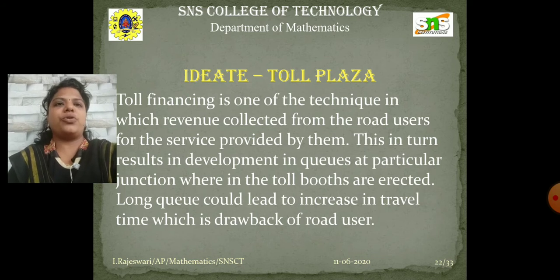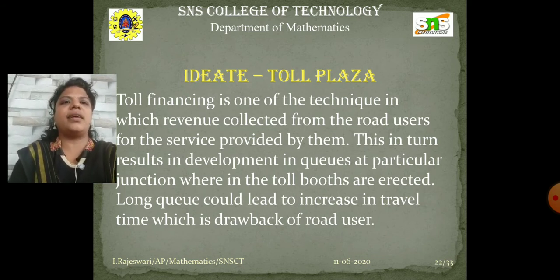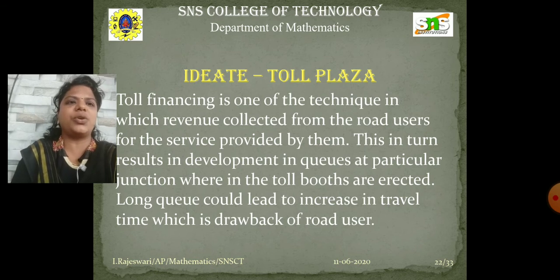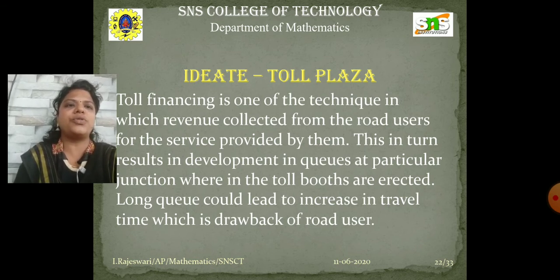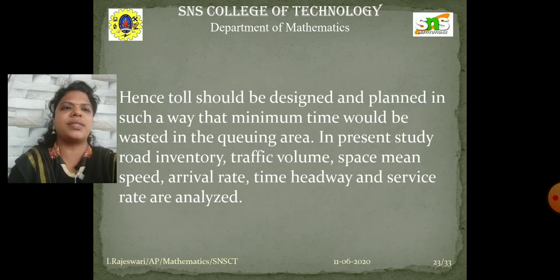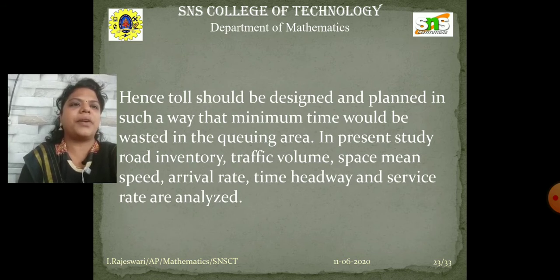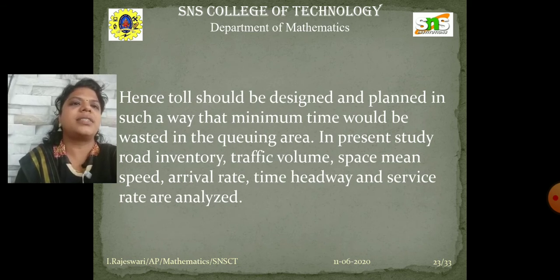Now, the third stage is Ideate. I am going to discuss the toll plaza. Toll financing is a technique in which revenue is collected from road users for the service provided. This results in the development of queues at particular junctions where toll booths are erected. Long queues can lead to increased travel time, which is a drawback for road users. Hence, toll plazas should be designed and planned such that minimum time is wasted in the queuing area. In the present study, the parameters analyzed include road inventory, traffic volume, space mean speed, arrival rate, time headway, and service rate.